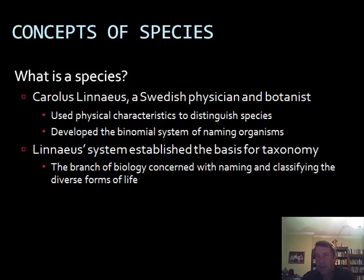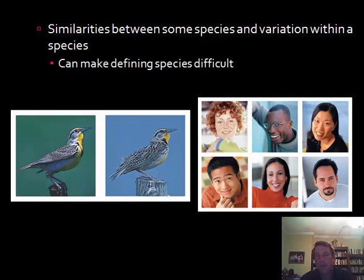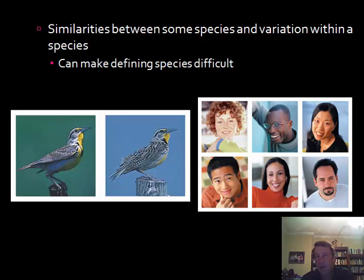Linnaeus gave us the field of grouping and naming things, but breeding alone and physical characteristics alone are not the best criteria. For example, these two meadowlark birds look very similar, but they cannot breed and do not produce fertile offspring. They are from different locations and have developments that prevent interbreeding, so they are considered two different species despite looking very similar.